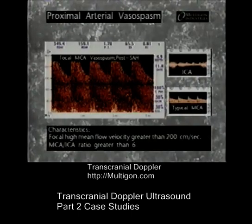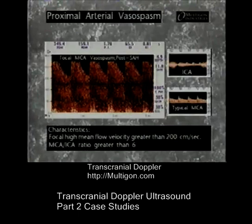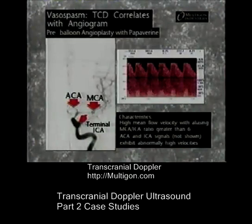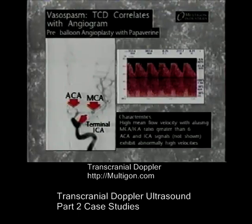Ratios higher than 3 may indicate vasospasm while ratios lower than 3 may indicate hyperemia. In this case, a focal mean flow velocity in the MCA which exceeds 200 centimeters per second and an MCA-ICA ratio greater than 6 indicates severe proximal arterial vasospasm. Digital subtraction angiography shows severe vasospasm in the M1 segment of the MCA, terminal ICA, and A1 segment of the ACA.